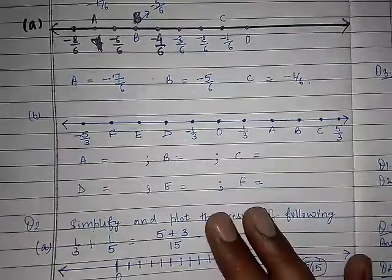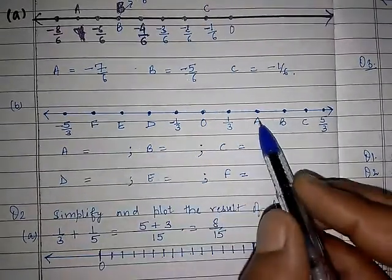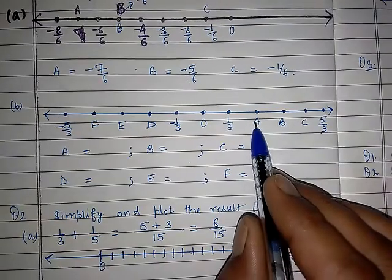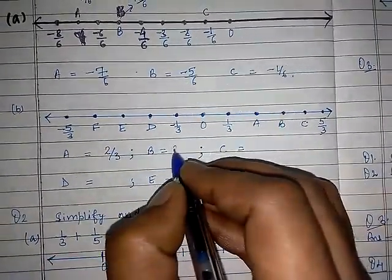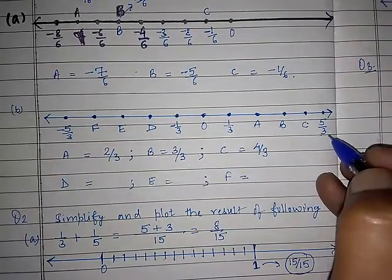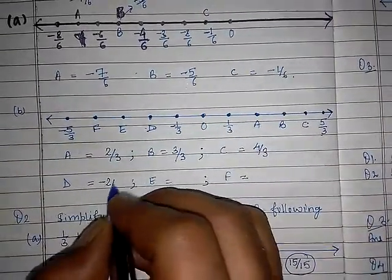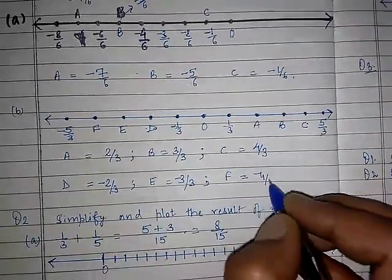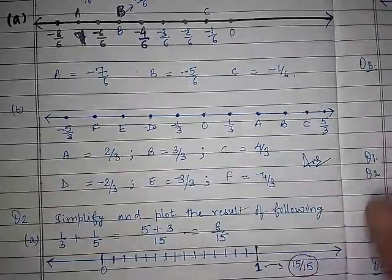Come to Part B. Now 11 numbers are given and you need to find out the values of A, B, C, D, E, and F. Let us start from A. See the pattern: 1 upon 3 and 5 upon 3 are given. A will be equal to 2 upon 3, B will be equal to 3 upon 3, and C will be 4 upon 3. After 4, 5 is coming, which is already written. Then come to D — before minus 1 you can see minus 2 upon 3. E will be minus 3 upon 3, and F will be minus 4 upon 3. After minus 4, minus 5 is there, so our answers are correct. Very easy questions.